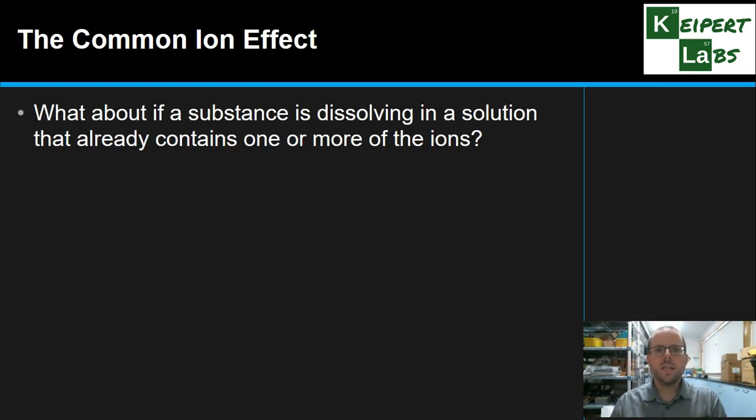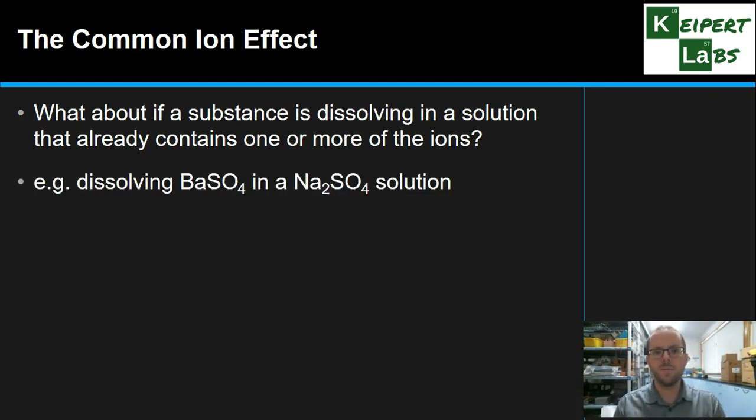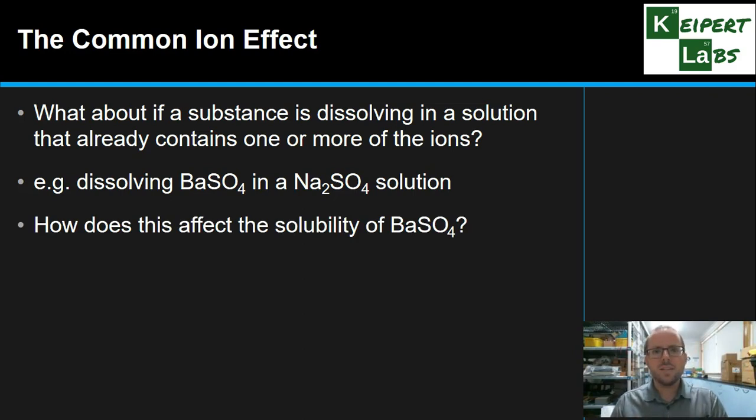Now the common ion effect concerns us when we're thinking about what if a substance is dissolving in a solution that already contains one or more of the ions that are trying to dissolve. What if you're trying to fit ions into a solution that's already got some there? For example, if we were trying to dissolve barium sulfate in a solution that contains sodium sulfate, we can see that there's sulfate ions already dissolved in that solution. So then that suggests to us that that's going to have an impact. And when we're thinking about this, we can think, how is it going to affect the solubility of this barium sulfate? Is more going to dissolve? Is less going to dissolve? And why?